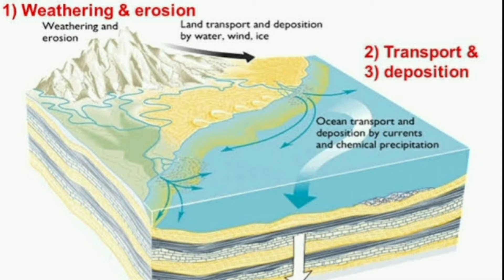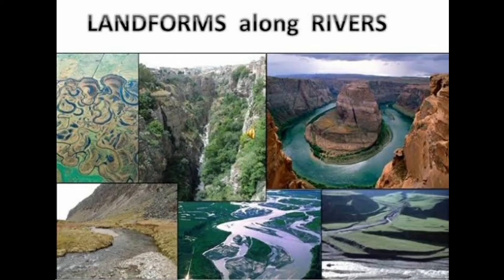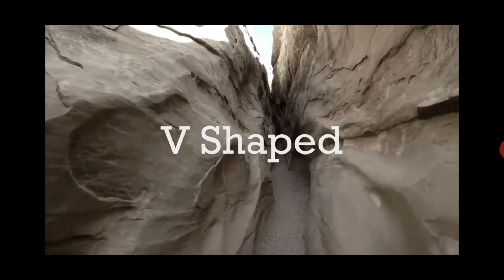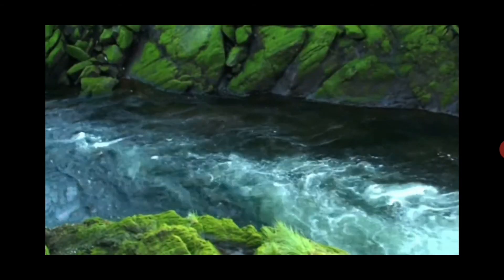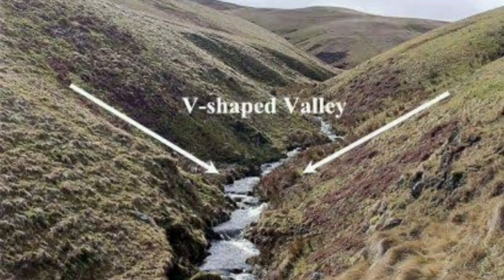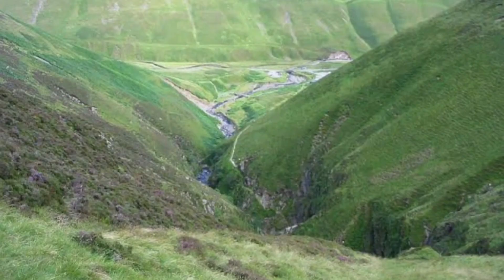Let's learn about the different types of landforms caused by the work of water. Generally, the work of the river begins in the high mountains. The river flows down through steep slopes and has great force, cutting the mountains vertically. This results in the formation of deep valleys in the shape of a V, so they are called V-shaped valleys.